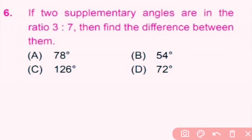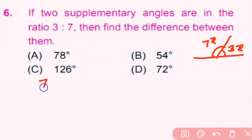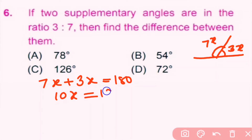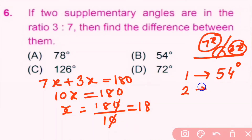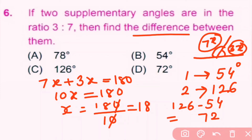Question number 6: If two supplementary angles are in the ratio 3:7, find the difference between them. We take the angles as 3x and 7x. The sum of supplementary angles is 180 degrees, so 7x plus 3x equals 180, giving 10x equals 180, so x equals 18. The first angle is 3 times 18 equals 54 degrees, and the second is 7 times 18 equals 126 degrees. The difference is 126 minus 54 equals 72 degrees. D is the correct answer.